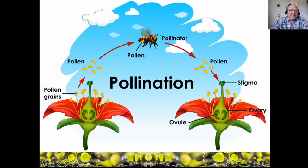Here comes Mr. B the bee - he says 'I need some yummy nectar to make my honey,' and crawls through all the anthers, which deposit their pollen on him. The bee then flies to the next flower, and as he goes in he touches the sticky stigma and the pollen is deposited. Then the pollen actually grows a tube called the pollen tube, all the way down into the ovary and up to the ovule, where sperm and egg can merge and create a new seed.